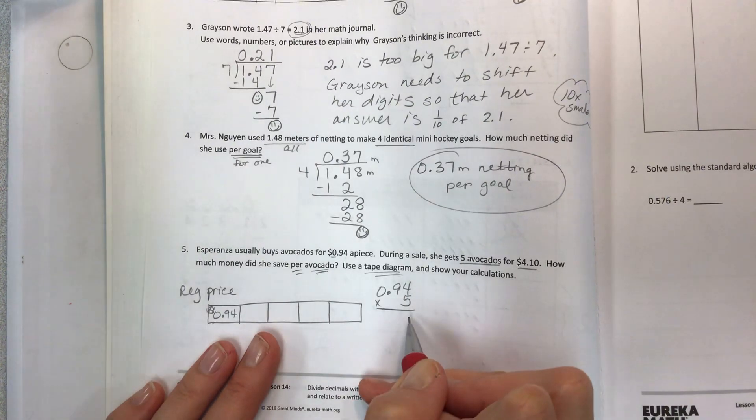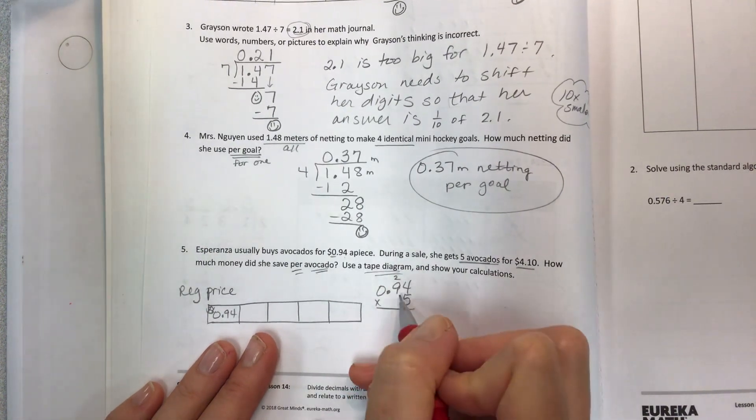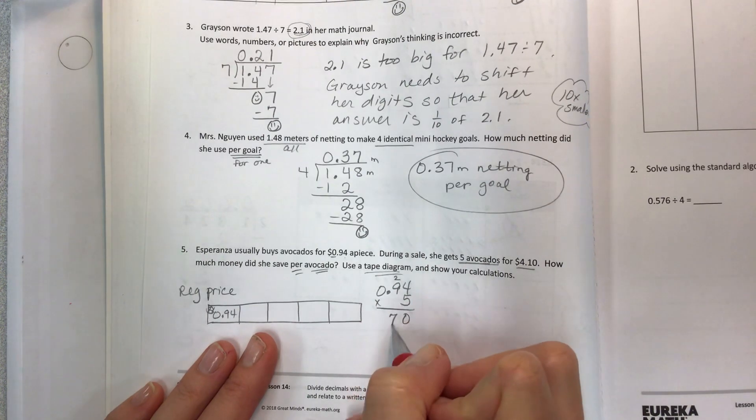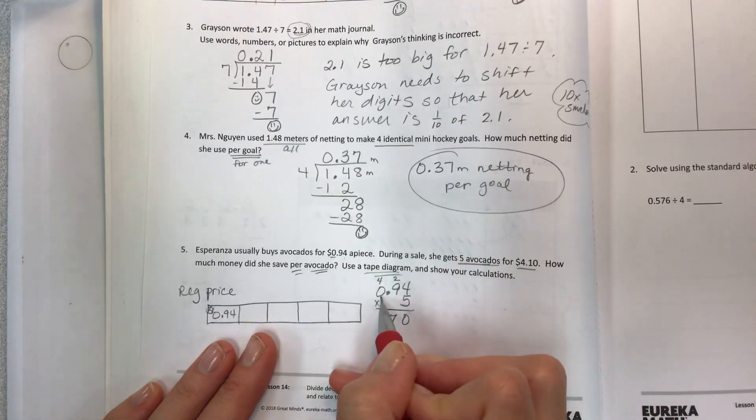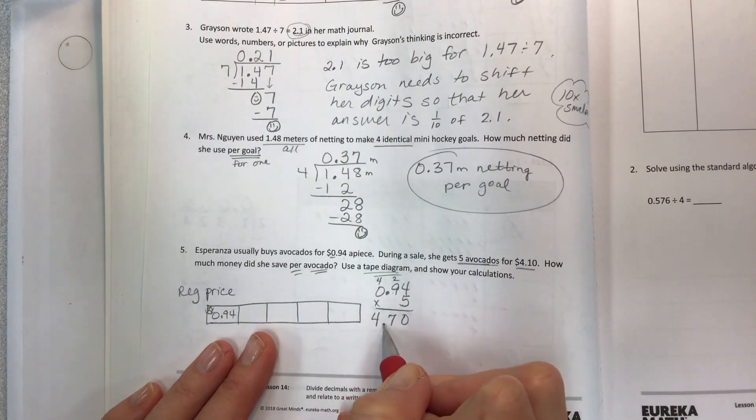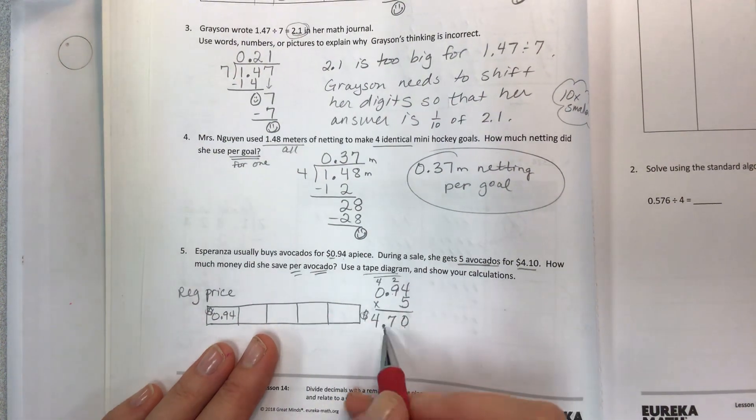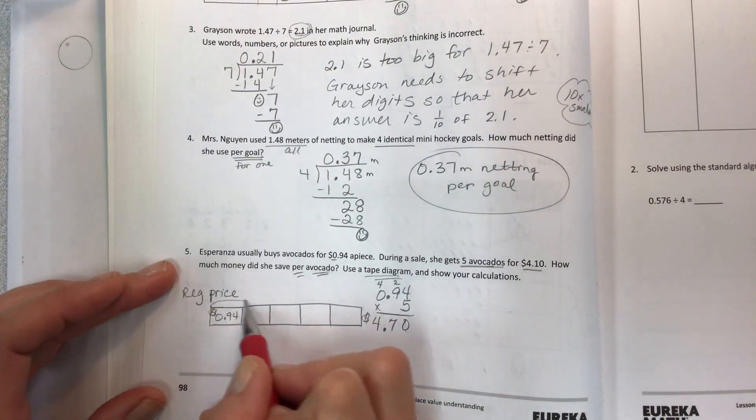Five times four is 20. Five times nine is 45 plus two is 47, carry the four. Five times zero, zero, and then four comes down. Hundredths here, or one, two positions up here. So hundredths here, one, two positions in your answer. And so that is four dollars and seventy cents.